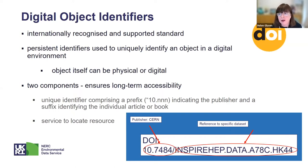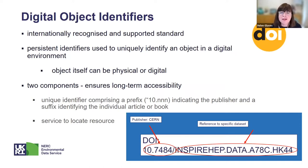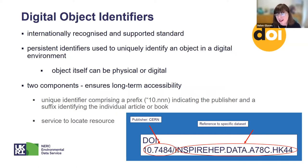A Digital Object Identifier is an internationally recognized and supported standard that is incredibly widely used. Persistent identifiers are used to uniquely identify an object in a digital environment. Importantly, the object itself can be physical or digital — not just data, software, or journal articles, but also a material sample. A DOI is made up of two components.